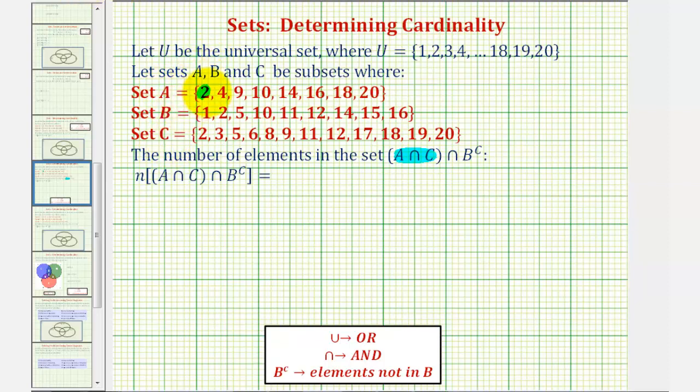Notice two is in A and C, so is nine, 18, and 20. So A intersect C contains the elements two, nine, 18, and 20.